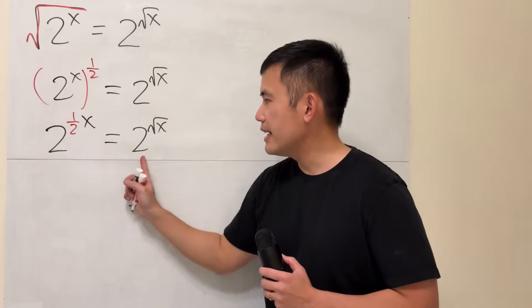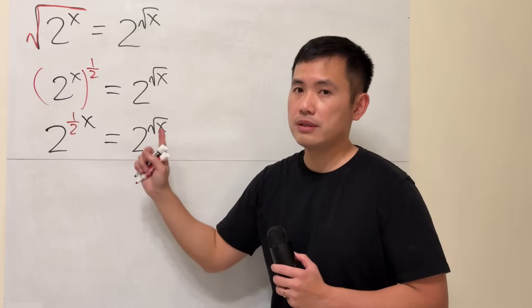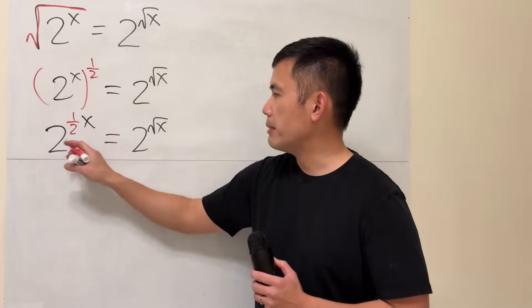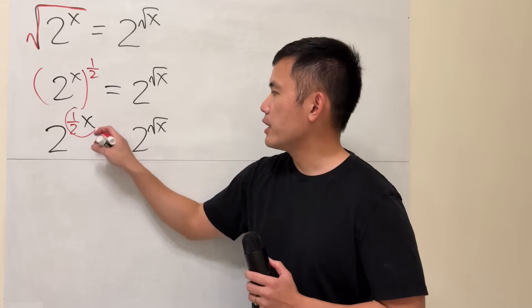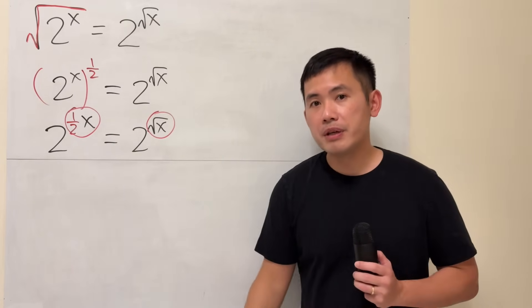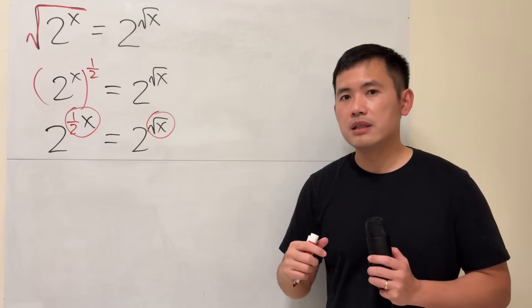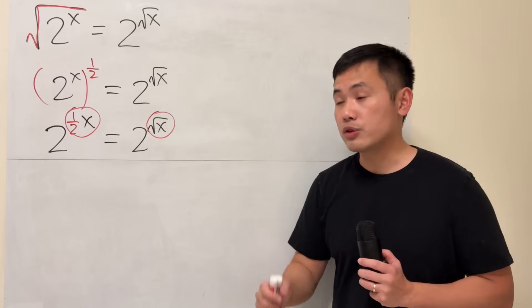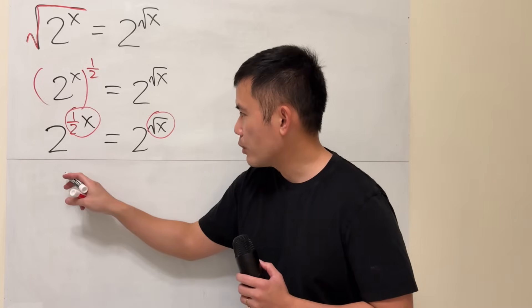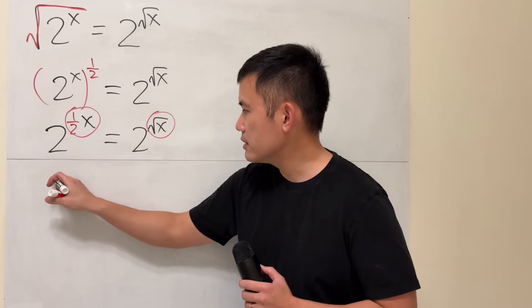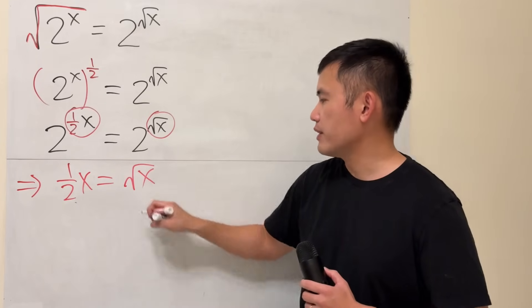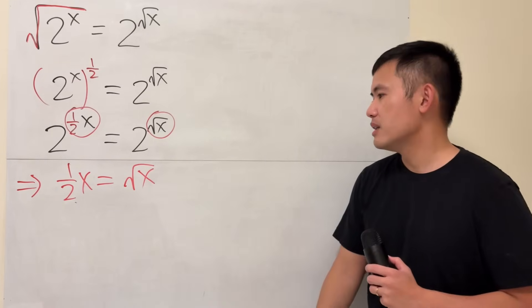Now both sides have the same base, which is 2. Whenever the bases are the same, we can conclude that the exponents must be the same — because 2 to the x is a one-to-one function. So the exponents must be equal, which gives us one-half x equals the square root of x. Now we just have to solve that.